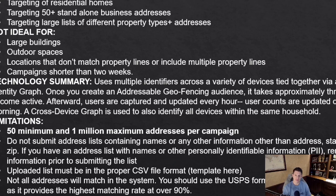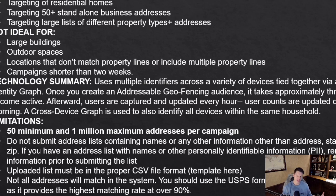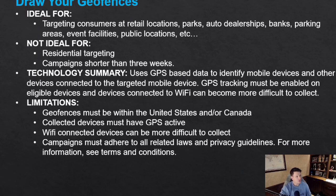There are limitations on how you can utilize addressable geofencing for privacy and legal reasons, but no personal information is saved — even the address information gets converted into a cryptographic ID. You must upload with a CSV file in the correct format; the system won't accept other formats, and we do provide a template when you reach that section. This feature must be used within the United States and must adhere to all applicable laws and privacy regulations.